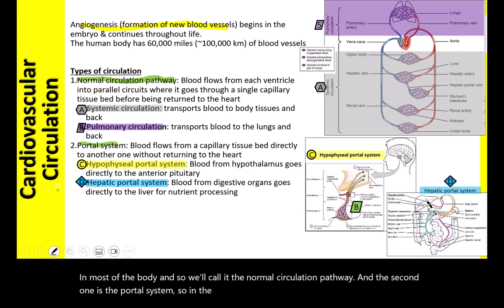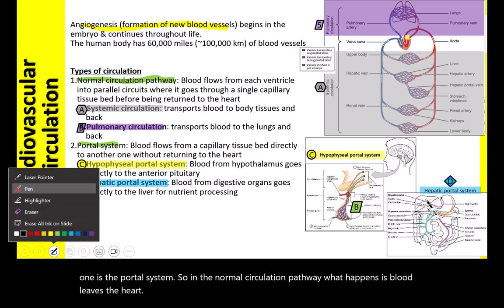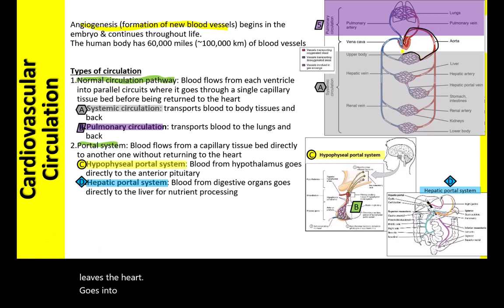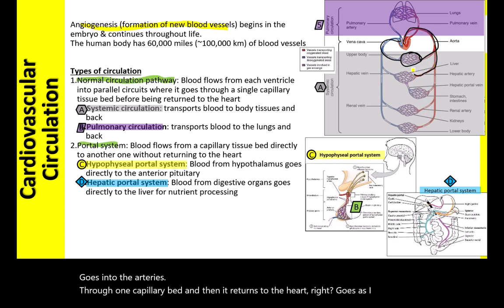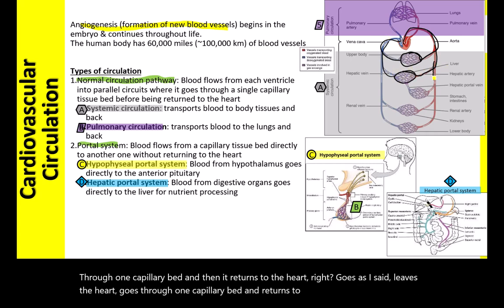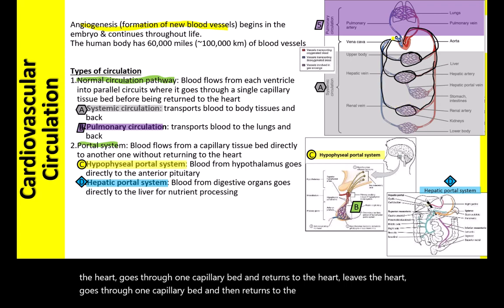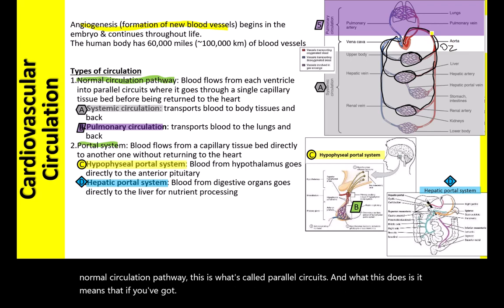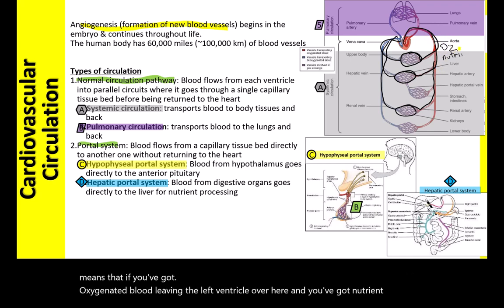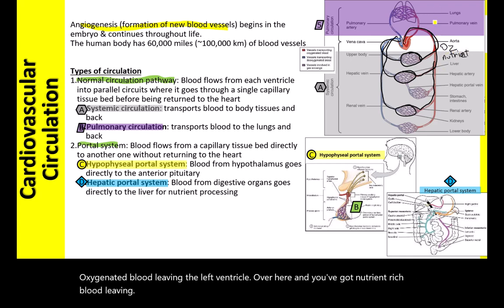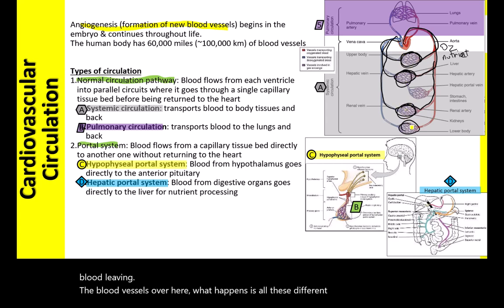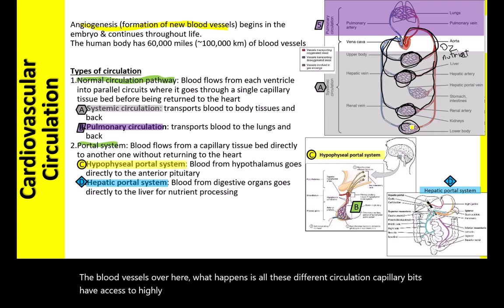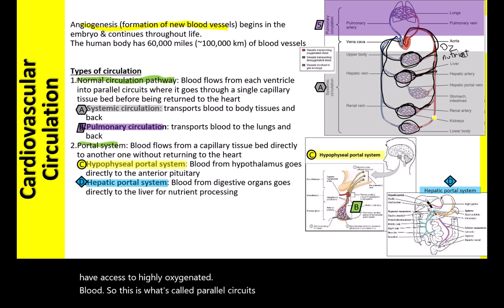In the normal circulation pathway, blood leaves the heart, goes into the arteries, through one capillary bed, and then returns to the heart. This is called a parallel circuit. Oxygenated blood leaving the left ventricle and nutrient-rich blood leaving the vessels means all the different capillary beds have access to highly oxygenated blood simultaneously — running in parallel to each other.